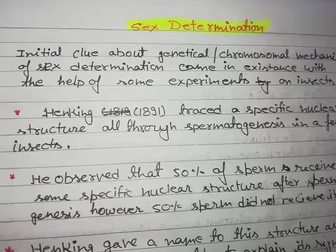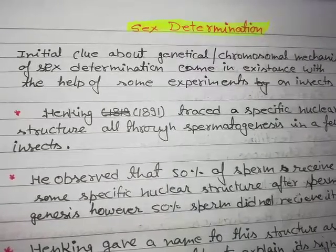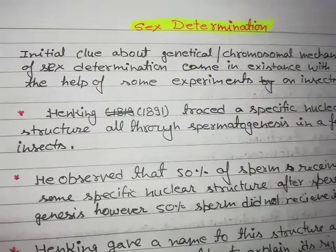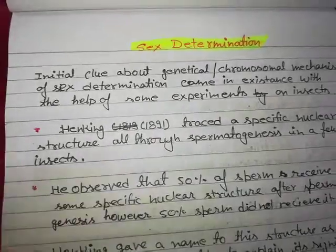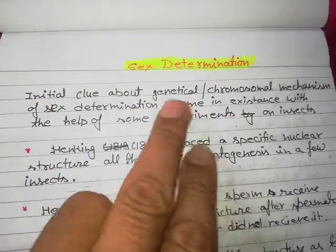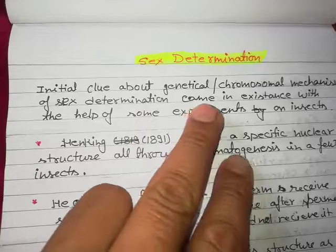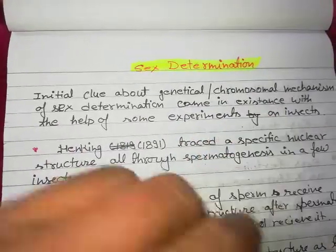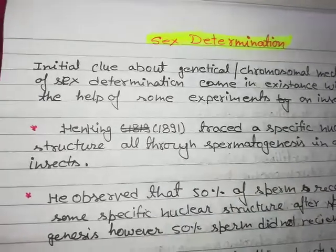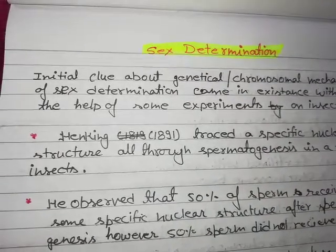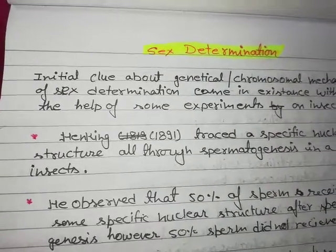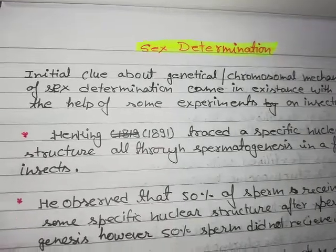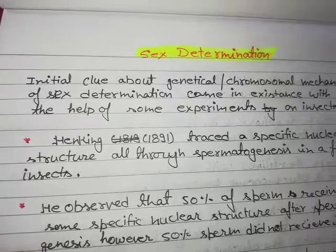I will tell you what were the various attempts and how the scientists were able to determine the sex of an individual. The initial clue about the genetical as well as the chromosomal mechanism of sex determination came with the help of some experiments on insects. Initially the experiments were carried out in various insects, and there was a scientist whose name was Henking.